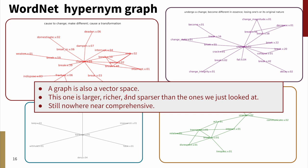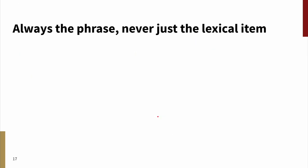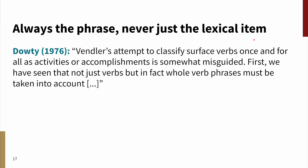For instance, they might have predictive force that we could test experimentally by asking people what they take to be the entailments or non-negotiable commitments of utterances involving these different senses, and that would be a test of whether these are actually latent dimensions. Stepping back, though, let me just mention a few things to summarize. A graph is a vector space. This one is larger, richer, and sparser than the one that we just looked at, but it's still nowhere near comprehensive. There's a lot we still need to uncover. There's a second insight from linguistics that I want to pull out. When we think about doing these analyses, we should live by the motto, always the phrase, never just the lexical item.